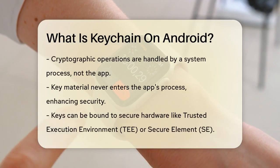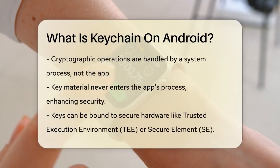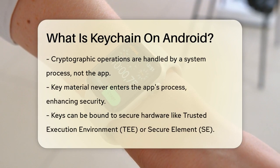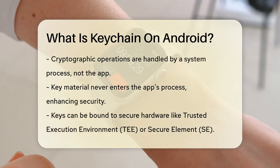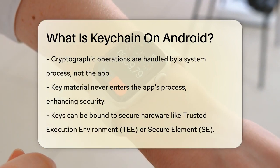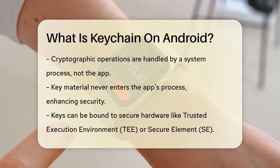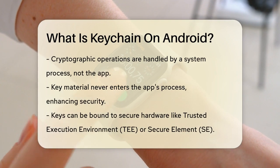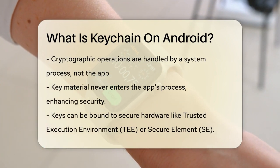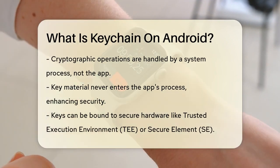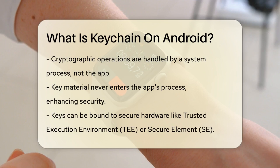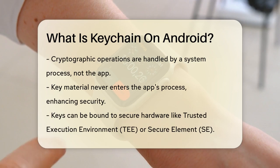Here's how it works. When an app uses a key from the Keychain, the actual cryptographic operations are performed by a system process, not by the app. This way, the key material never enters the app's process, making it much harder for attackers to get their hands on it.